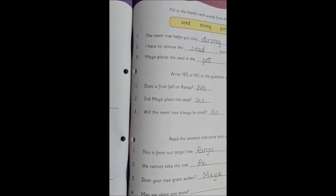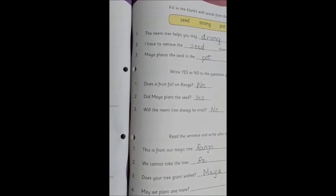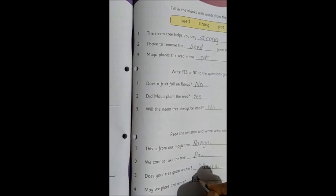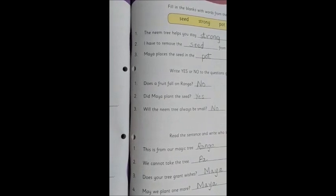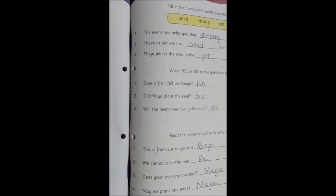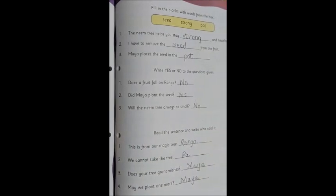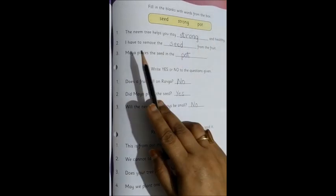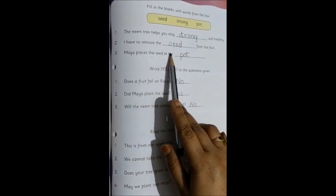And the last one, may we plant one more? Who asks this question at the end after the tree has become big? Again Maya. So we will write Maya. So now we have seen the who said to whom also. So in this similar manner you will be doing page 73 in your book. So do you want to read it once more? We can read it once more. The neem tree helps you stay strong and healthy. I have to remove the seed from the fruit. Maya places the seed in the pot.